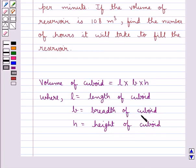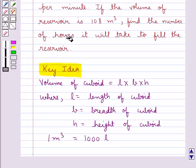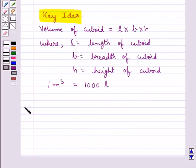We also know that 1 meter cube is equal to 1000 liters. This is the key idea for this question. Now let's see the solution.